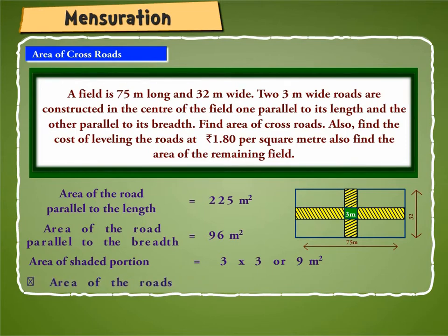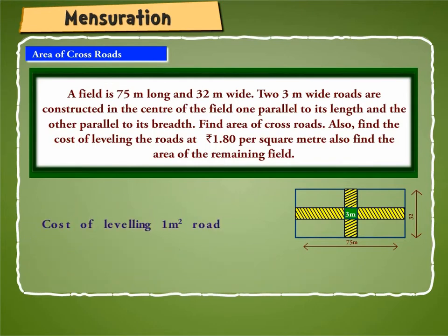Therefore, area of the roads is equal to 225 plus 96 minus 9 square meter or 312 square meter.